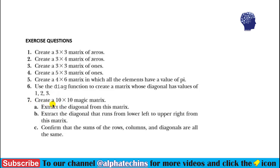In question seven, you have to create a 10 by 10 matrix using the magic function, then extract the diagonal from that matrix. In part B, you have to extract the diagonal that runs from lower left to upper right. I'm going to show you how to perform this and then confirm whether the sums of rows, columns, and diagonals are the same — which I think they will not be, since we are creating a random matrix using the magic function.